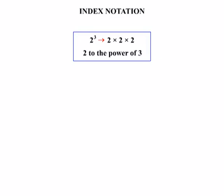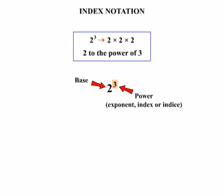We're going to look at a couple of different terms and definitions you need to be aware of when working through index notation. Writing 2 to the power of 3, we look firstly at the number 2 — it's at the bottom, so it's called our base number. Then our 3 — the name you're probably most familiar with is power, but it can also be called an exponent, an index, or an indice. We'll use all those different names so you get used to each of them.